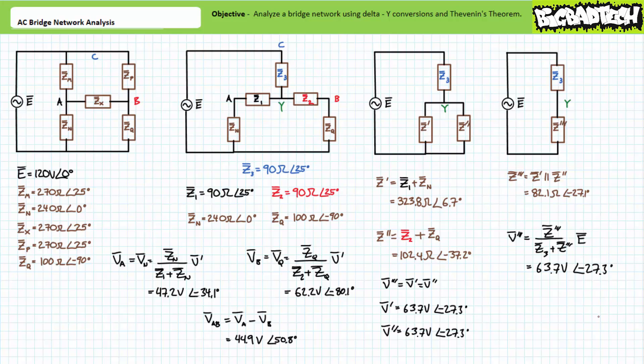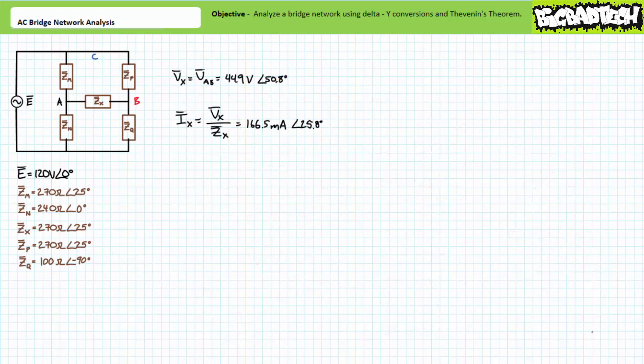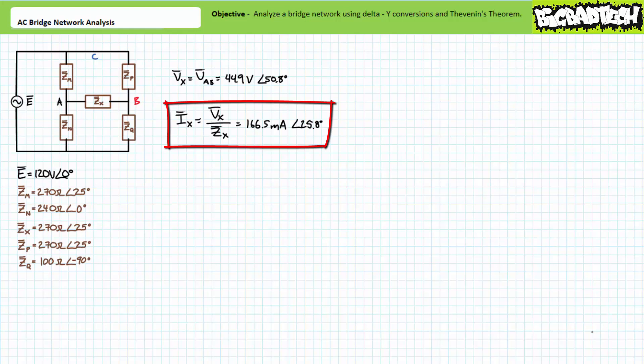Since the bridge network is none the wiser to the substitution of the balanced Y for the balanced delta, the differential from node A to node B for our earlier balanced delta configuration is also 44.9 volts at 50.8 degrees. Because delta impedance ZX is between nodes A and B, the voltage across ZX is 44.9 volts at 50.8 degrees. Applying Ohm's law, the current through ZX is 166.5 milliamps at 25.8 degrees. In summary, substituting a balanced Y for a balanced delta converted the complex circuit into a simple series-parallel circuit, and the analysis mapped back to yield our desired results.